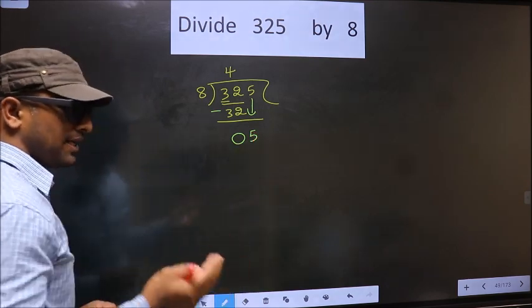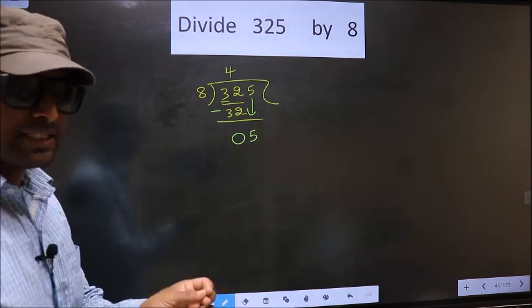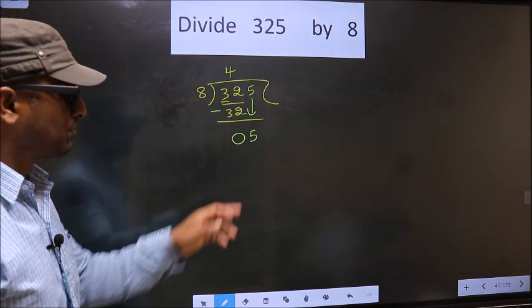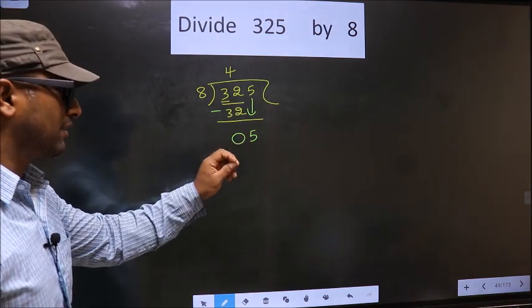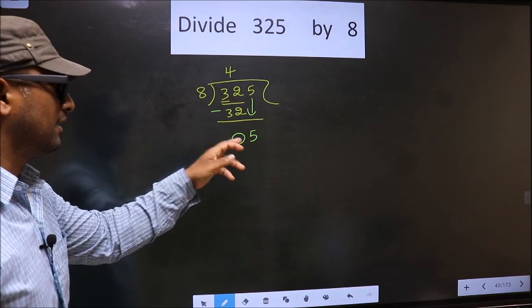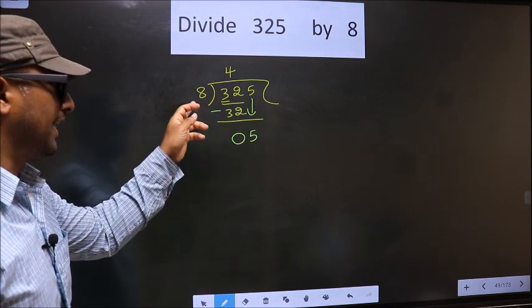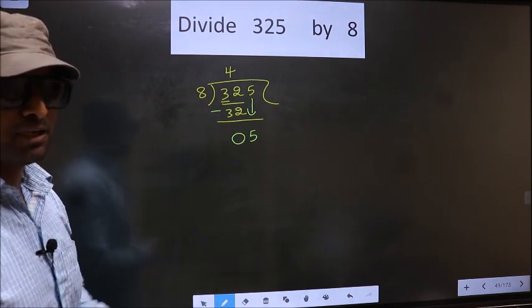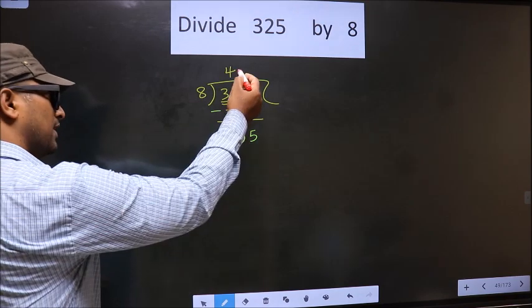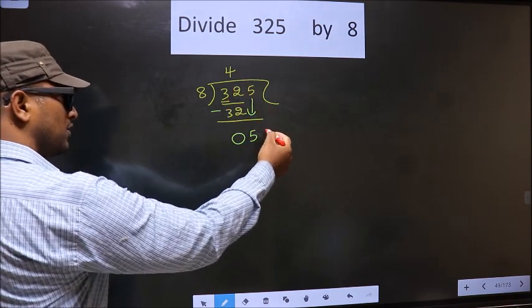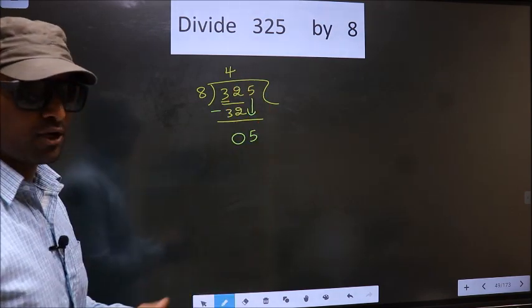This is where the mistake happens. And the mistake is this: Here we have 5, here 8. 5 is smaller than 8. So what many do is they put a dot and take 0 here, which is wrong.